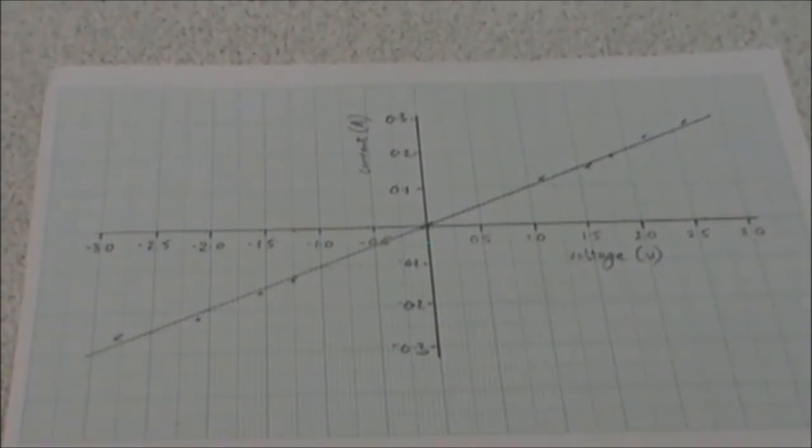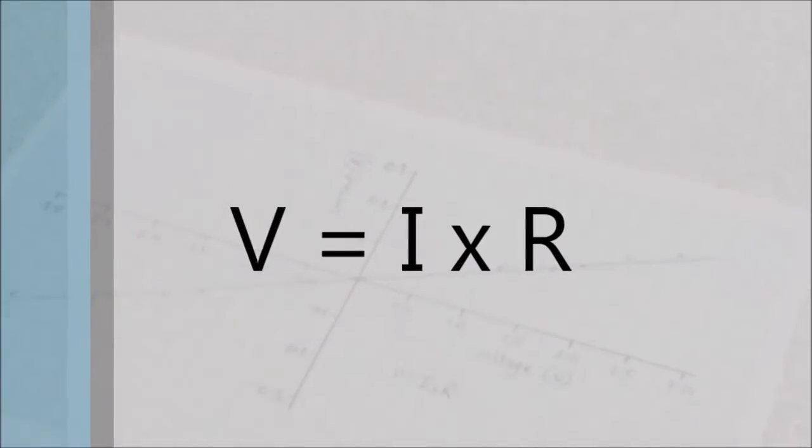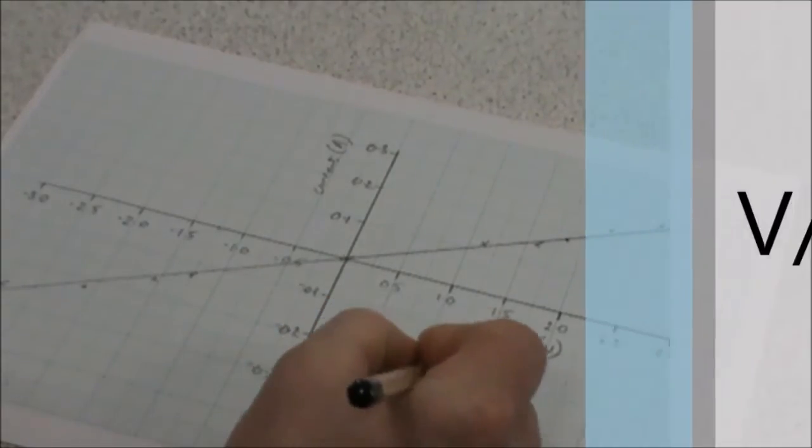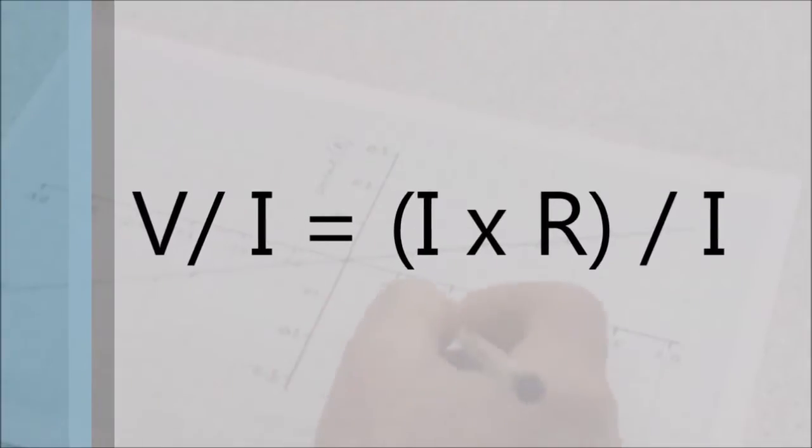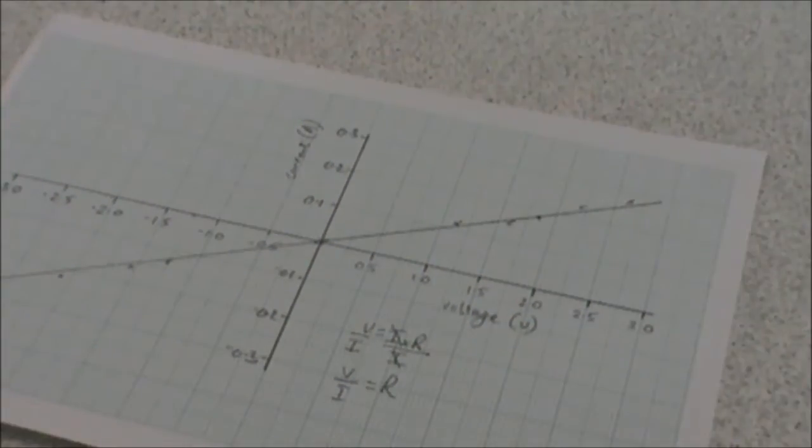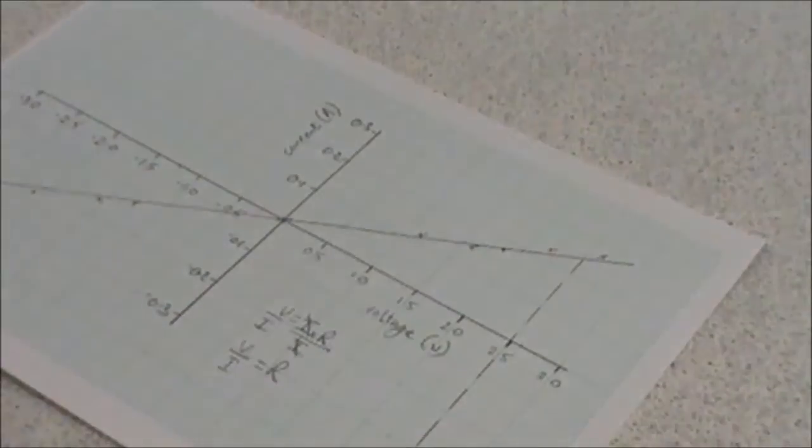And there's our completed graph. This graph shows us that our value for our resistor never changed throughout the experiment, because the gradient of the line will actually give us the resistance of the resistor. Using Ohm's law, which of course is V equals I times R, we can rearrange that to give us the resistance. To rearrange it, we divide both sides by I. Those two cancel out, which leaves us V over I equals R. We can then calculate the gradient of our graph using some values from the graph itself.